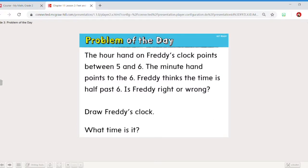We're going to skip over that and warm up our brains with the problem of the day. It says the hour hand on Freddy's clock points between the five and the six. The minute hand points to the six. Freddy thinks the time is half past six. Is Freddy right or wrong?